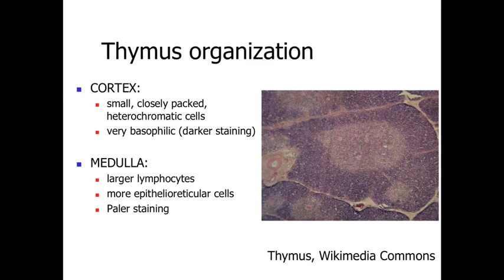Looking at the overall organization of the thymus, we're going to have a cortex around the outside. The cortex is going to be darker staining — very basophilic — because it's going to be packed with very small heterochromatic cells, lots of dense nuclei, inactive cells with not a lot of cytoplasm, packed very close to one another giving a very dark staining appearance. The medulla is going to be that central region where we have larger lymphocytes, more cytoplasm, diluting out the dark staining appearance so it's paler staining within the medulla. Still T lymphocytes, but also the location of the cell bodies for the epithelial reticular cells providing the stroma throughout this organ.